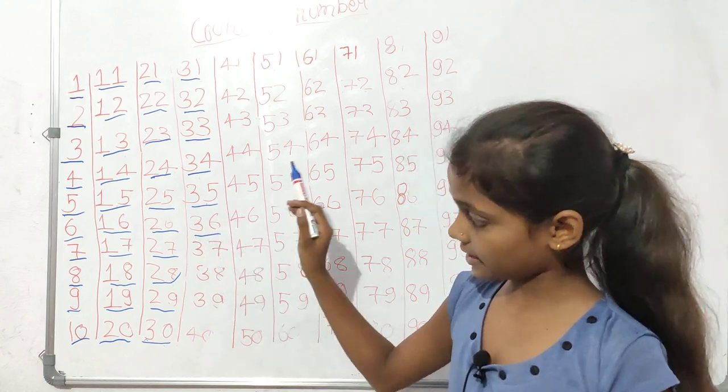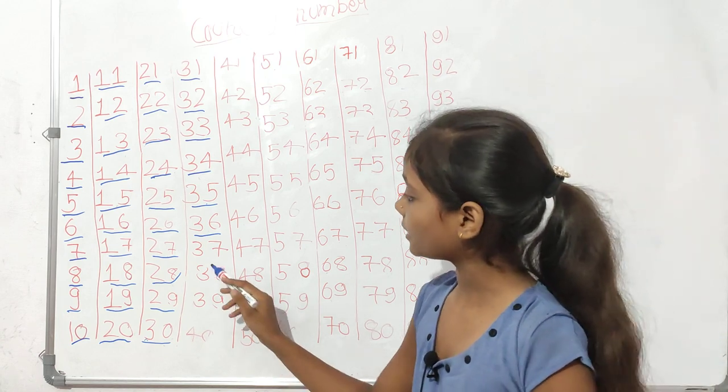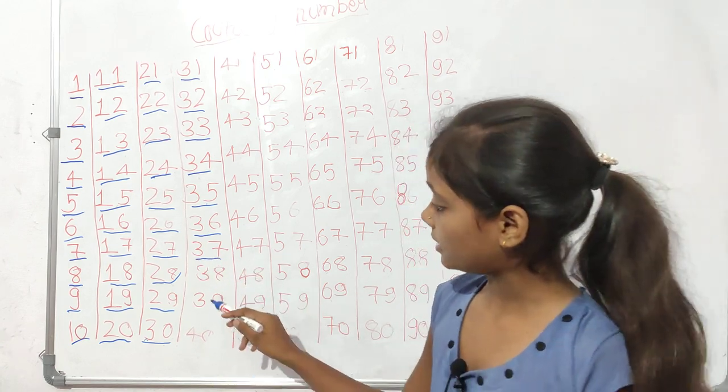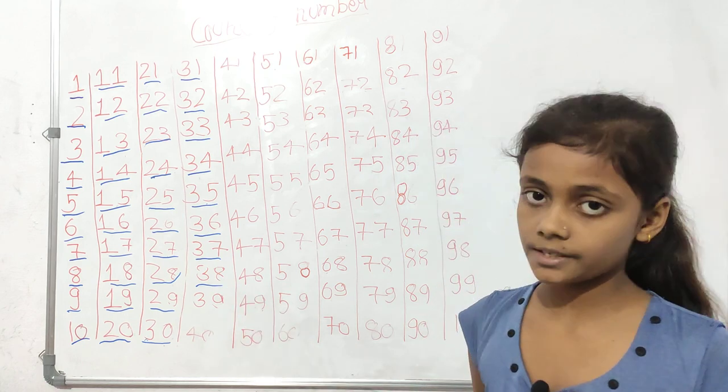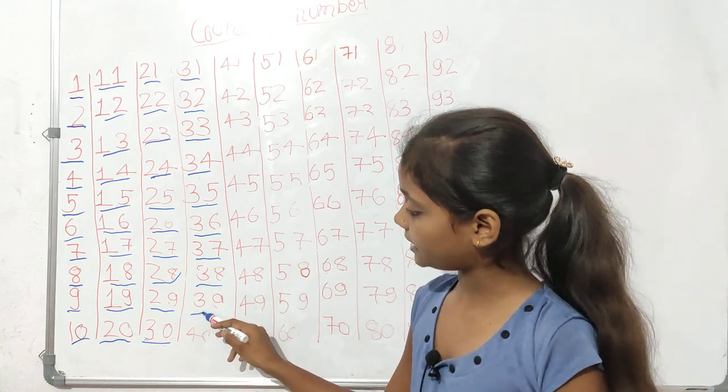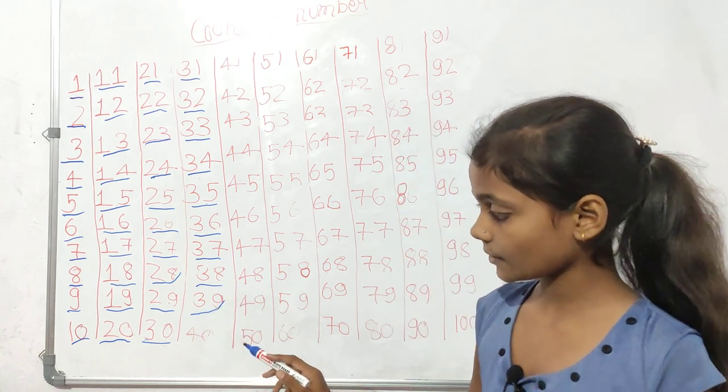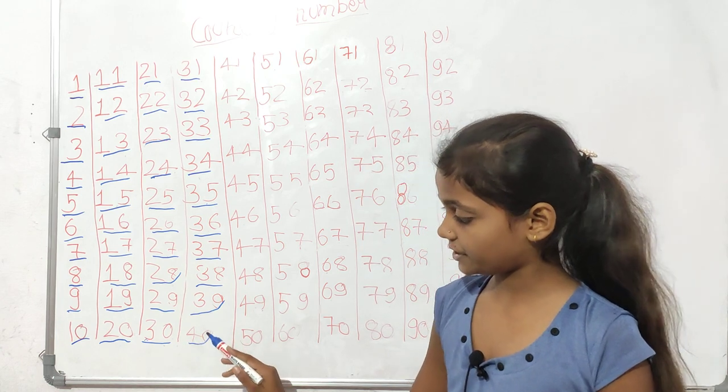Thirty-six, okay? Thirty-seven, thirty-eight, thirty-nine, four zero, forty.